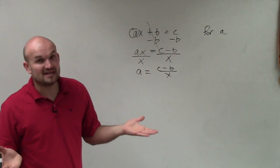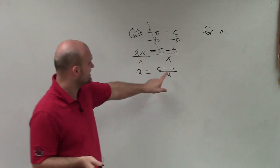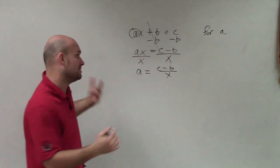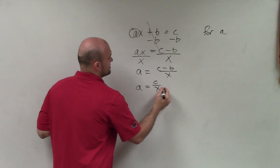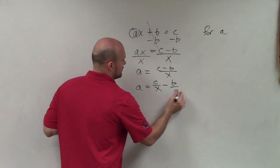Now, sometimes you could say, all right, that's correct, but we could also divide this x into both of these terms, and I'm going to rewrite this in a different form. I could say a equals c over x minus b over x.